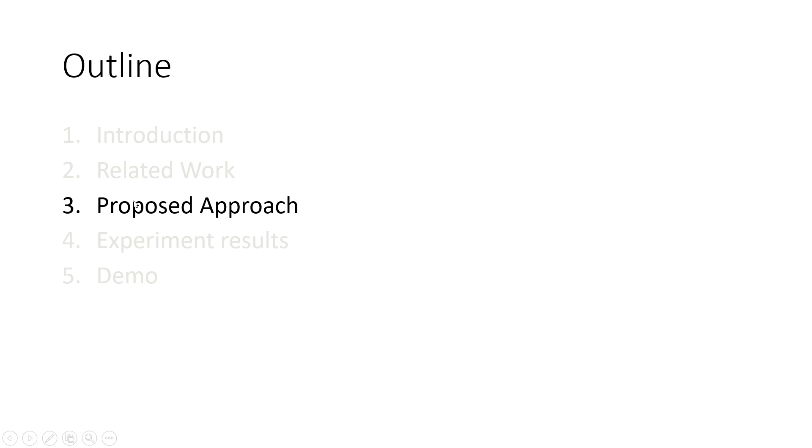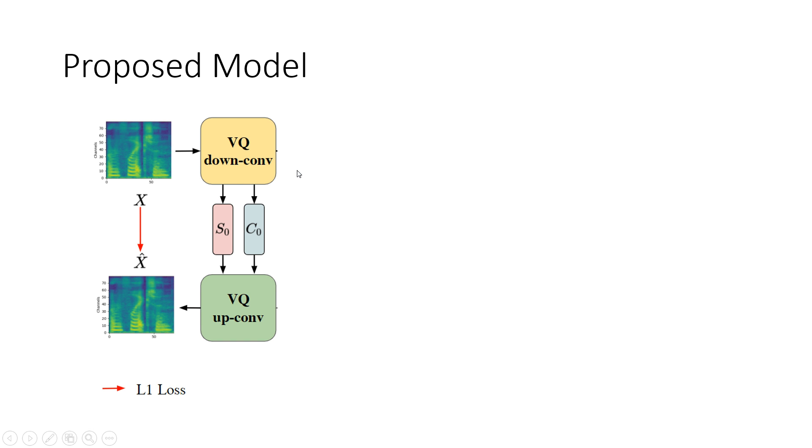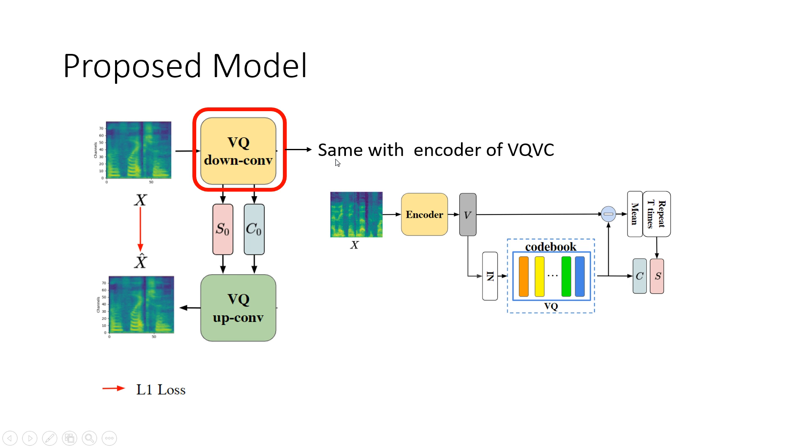Next is our proposed approach. Here we specify our notation. VQ-VC in conclusion is just the same with the encoder of VQVC, which comprises a convolution-based encoder, instance normalization and vector quantization, and it gets the content embedding and speaker embedding which is the same as the previous description.